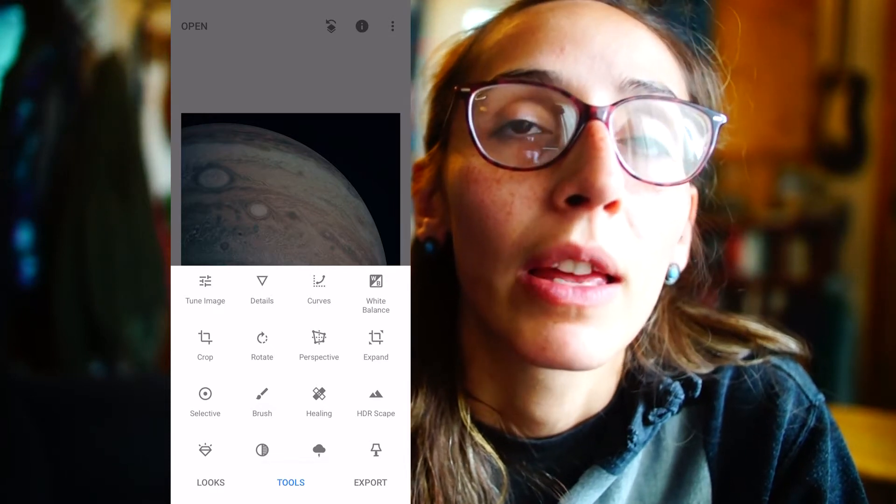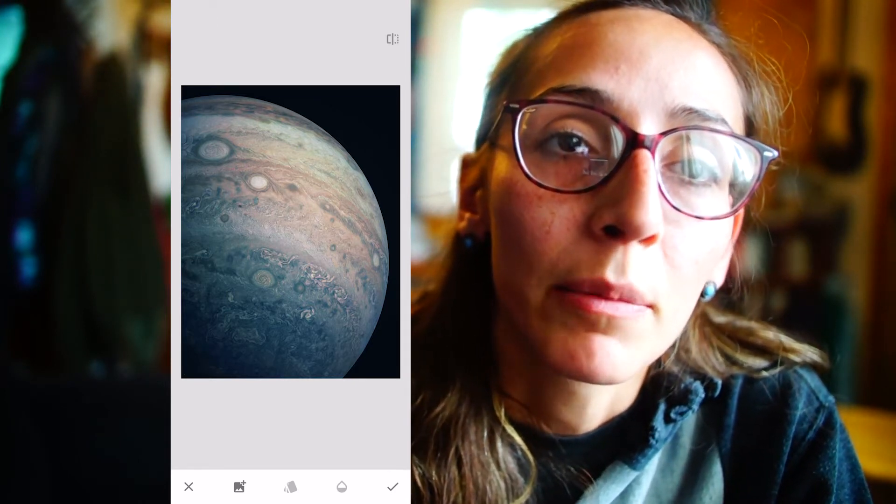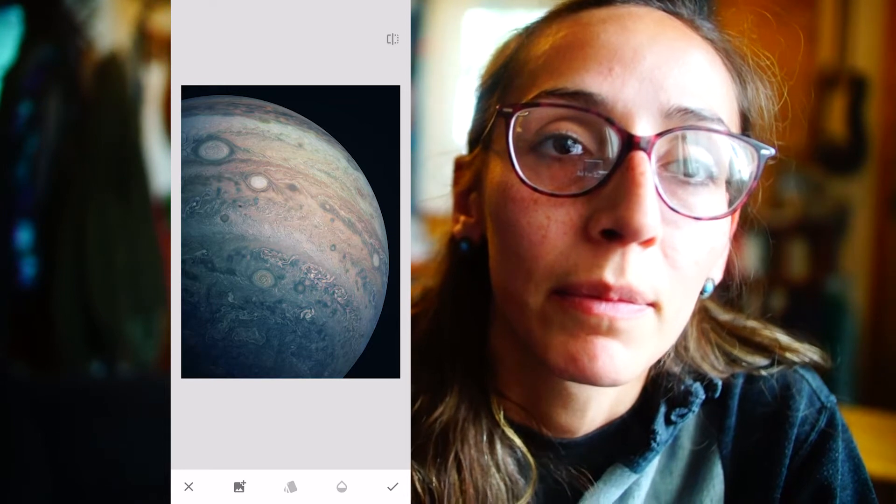If the film doesn't advance and another image gets imprinted or exposed onto that same slice of film, you'll create what's called a double exposure. You can create the same effect digitally by layering two images with varying opacity on top of each other.